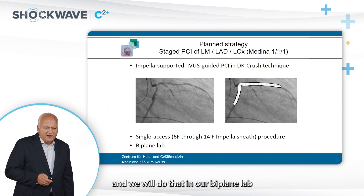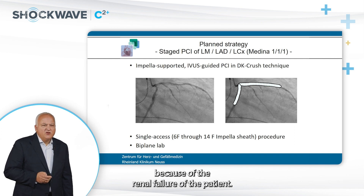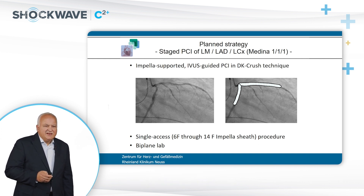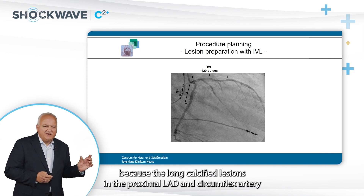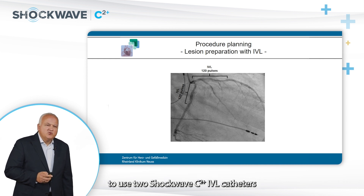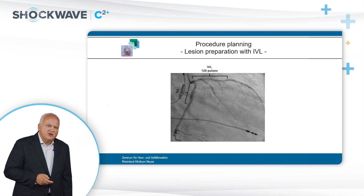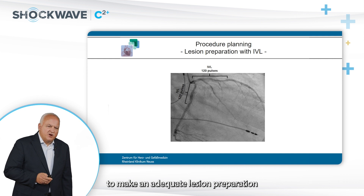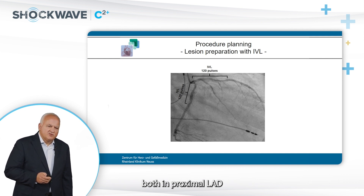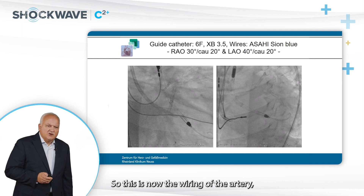We will perform the procedure in our biplane lab to save as much contrast as possible because of the patient's renal failure. Our goal is to use two C2-plus IVL catheters for both arteries — twice 120 pulses — to achieve adequate lesion preparation for the heavily calcified long lesions in both proximal LAD and proximal circumflex artery.